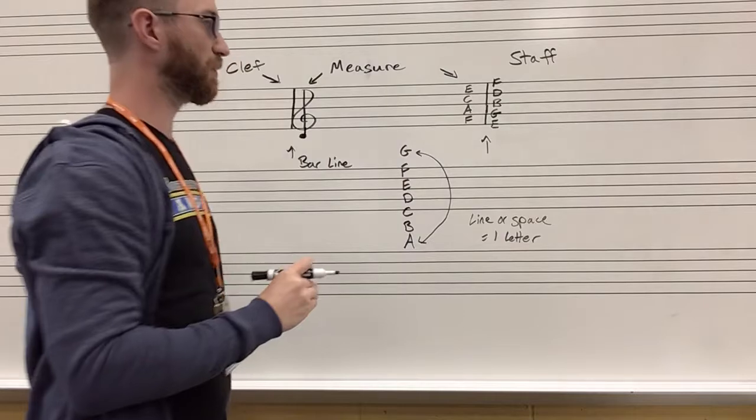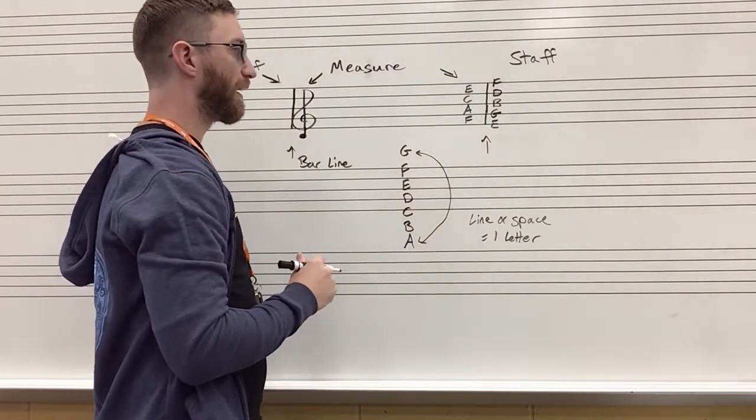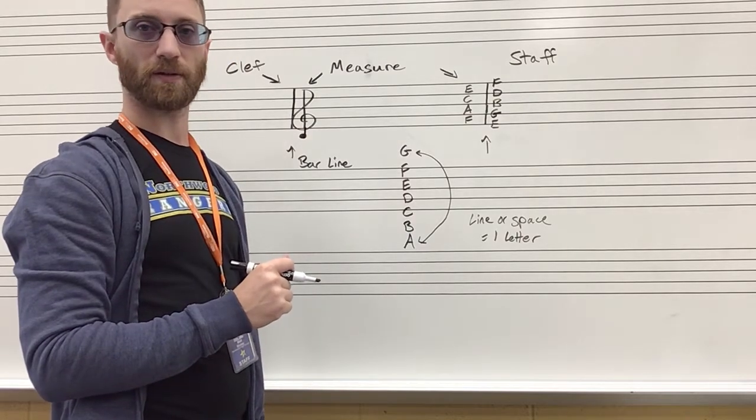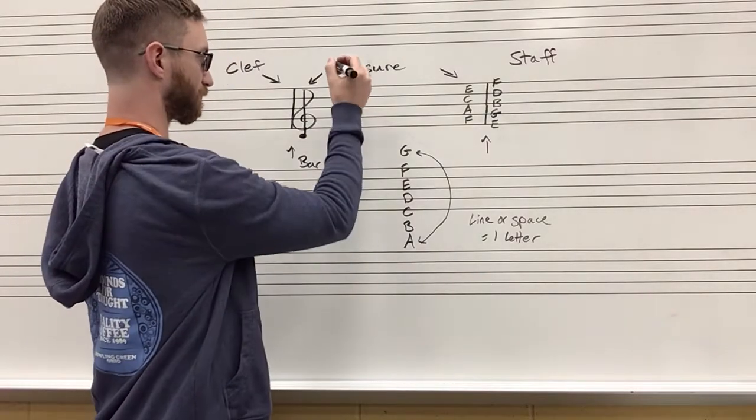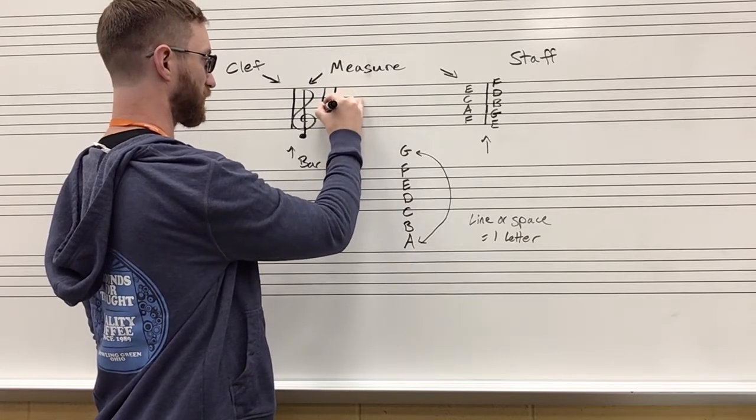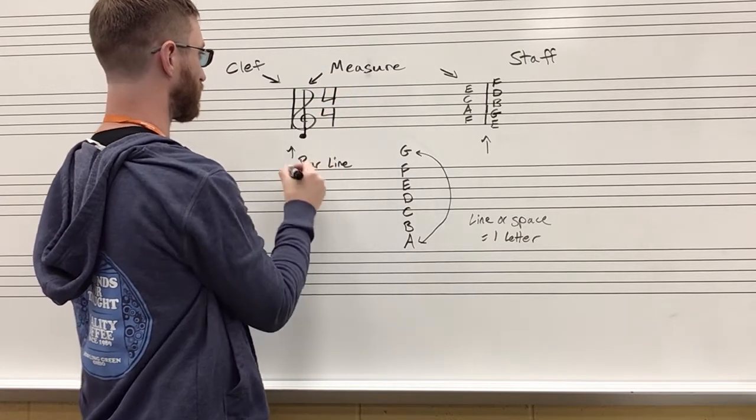Now that we know what the notes are, we need to know how many counts each measure is going to get and what kind of beat we are going to feel as the tempo. So here I'm going to put what's called a time signature.